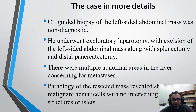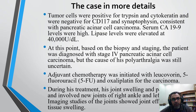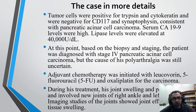There were multiple abnormal areas in the liver concerning for metastasis. Pathology of the resected mass revealed sheets of malignant acinar cells with no intervening ductal structures or islets. Tumor cells were positive for trypsin and cytokeratin, and negative for CD117 and synaptophysin, consistent with pancreatic acinar cell carcinoma. Serum CA-19-9 levels were high and lipase levels were elevated at 40,000 units per deciliter. The patient was diagnosed with stage 4, the most advanced stage of pancreatic acinar cell carcinoma, but the cause of the polyarthralgia was still uncertain.